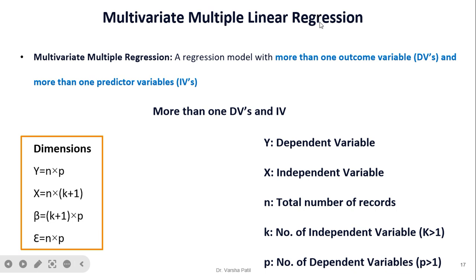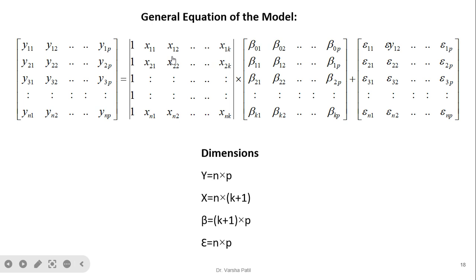In multivariate multiple linear regression, there is only one additional change: now both K and P are greater than 1, meaning there are more independent variables and more dependent variables. The dimension adjustments are: Y is N×P, X is N×(K+1), beta is (K+1)×P, and epsilon is N×P. Whatever the number of columns in Y, the same number applies for epsilon, and the first row of beta is always for the intercept followed by the slopes for each independent variable.